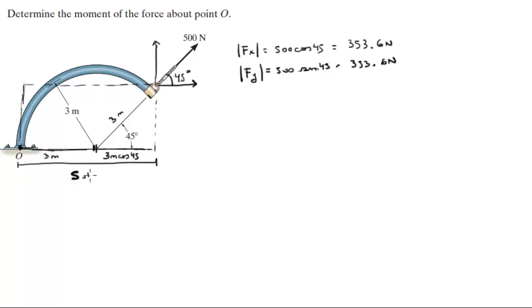Now the length of this lever arm is the same as the length of this lever arm right here, which is given by 3 sine of 45, which comes out to be 2.12 meters. Now that we have the lever arm and the components of the force, we can calculate the sum of the moments around O.